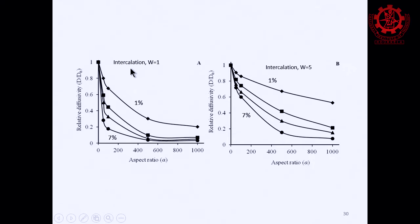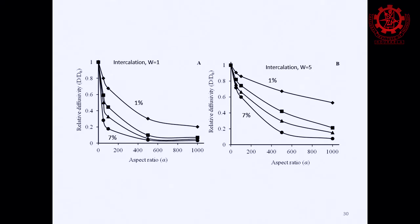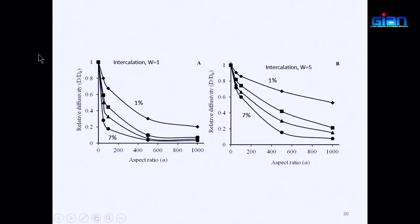The third factor is intercalation or aggregation. A value of one means just one platelet; two means two are sitting together. When they come together, they reduce the effective volume but do not help improve barrier property because one sits behind another. So the first platelet can block oxygen diffusion but the second one is not contributing. One platelet means one, and five means five platelets are stacked.